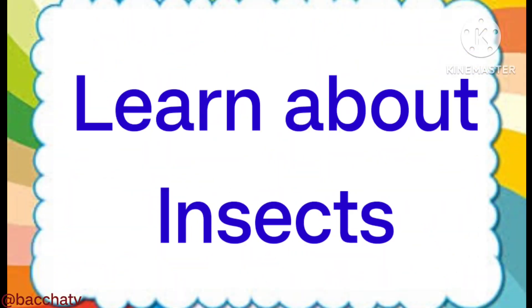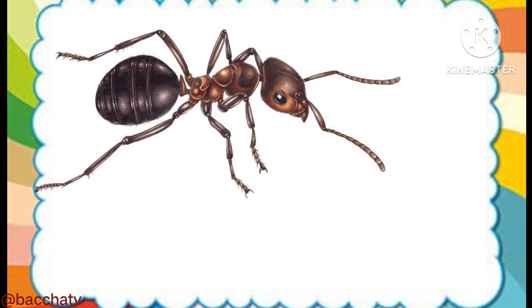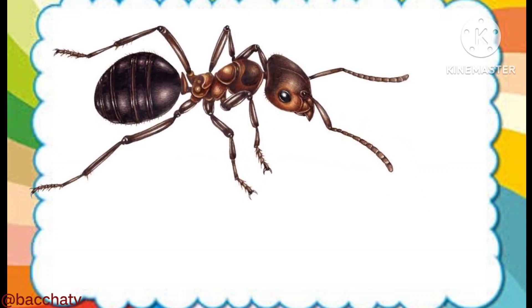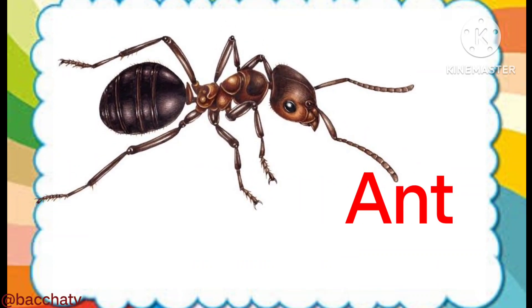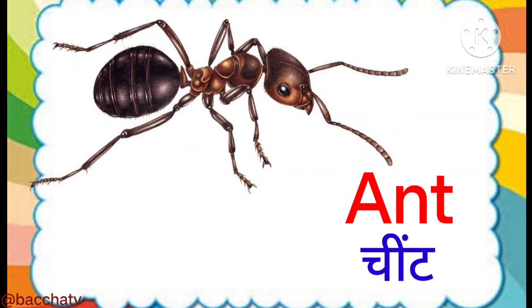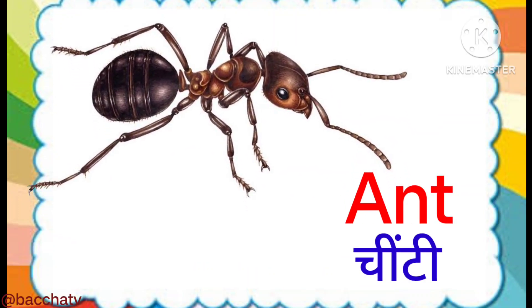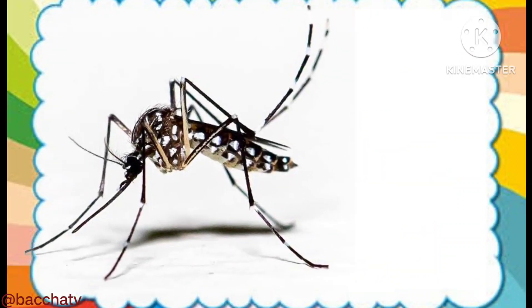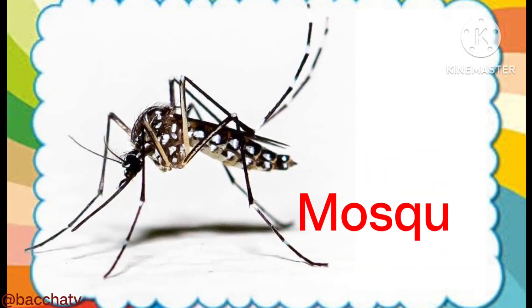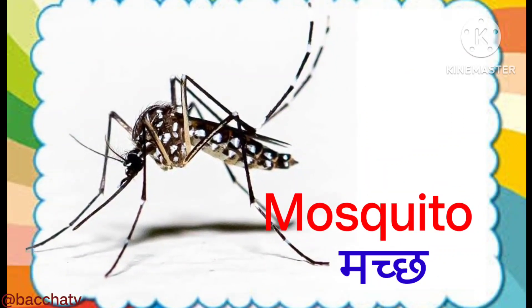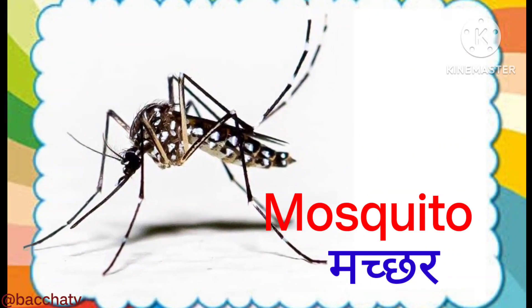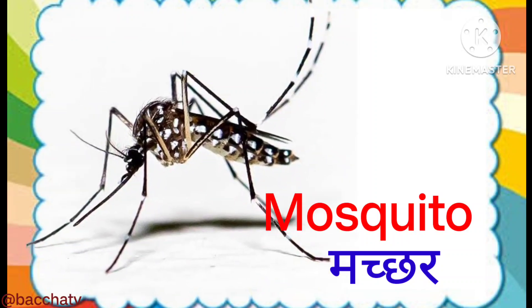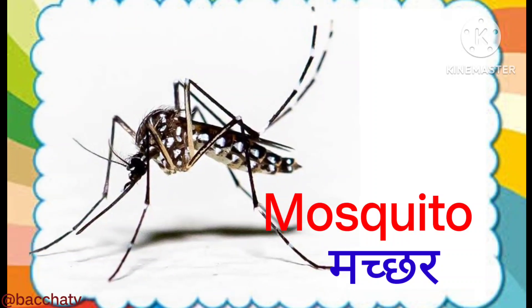Learn about insects. Ant — this is an ant. Ant means cheaty. Mosquito — this is a mosquito. Mosquito means machar.